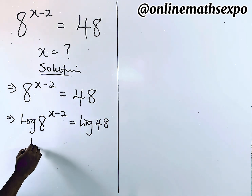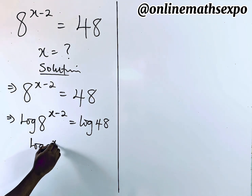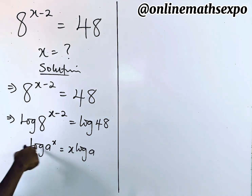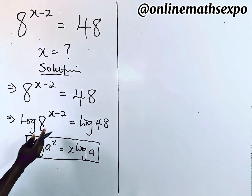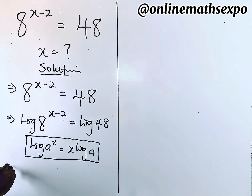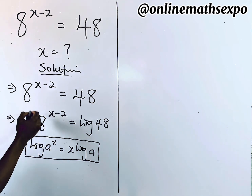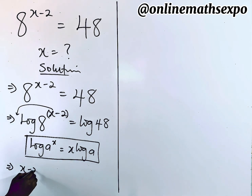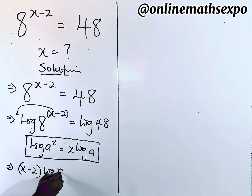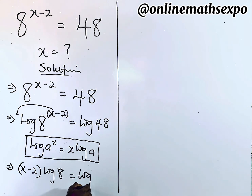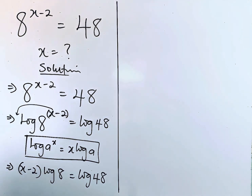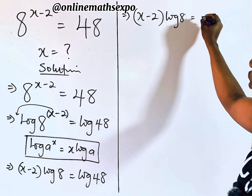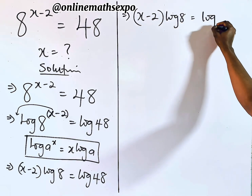Remember, for every log of a to the power of x, it's always equal to x·log(a) — the power multiplies the log. Applying this rule on the left side, we bring the power down: x minus 2 is multiplying log of 8, which is equal to log of 48.